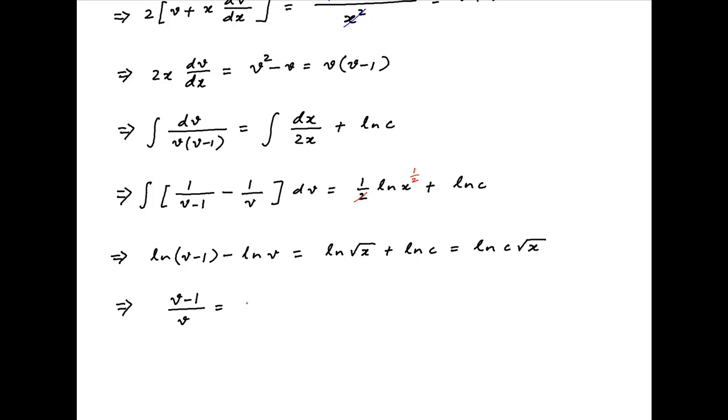It therefore follows that (v-1)/v = c√x. Now replacing v with y/x, we get (y/x - 1)/(y/x) = c√x.